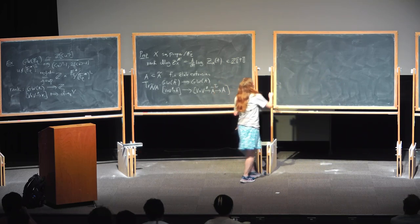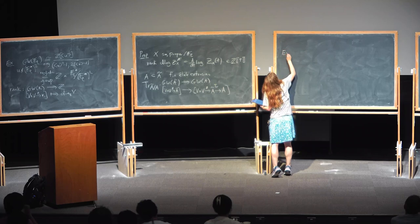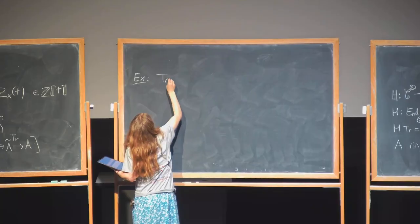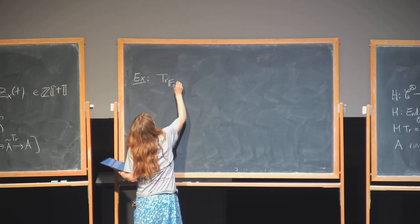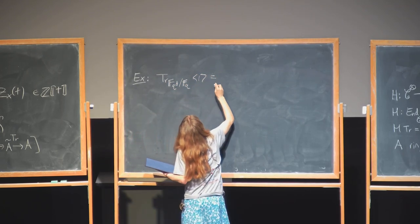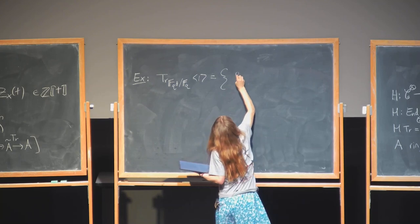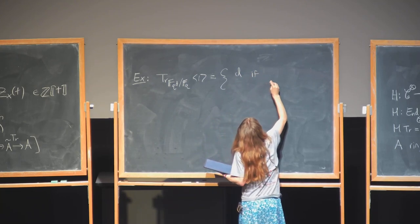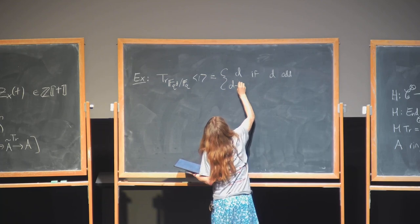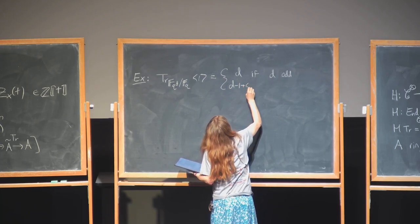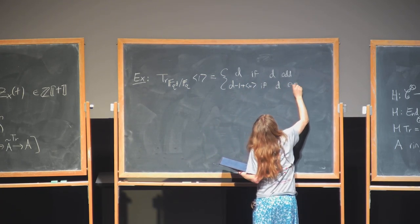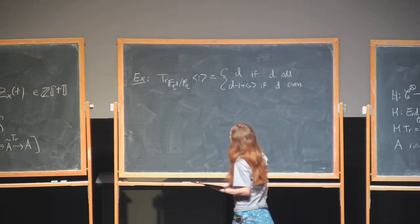An example: let's do the transfer Tr_{F_{q^d}/F_q}(1). This is going to be d⟨1⟩ if d is odd, and (d-1)⟨1⟩ + ⟨u⟩ if d is even.